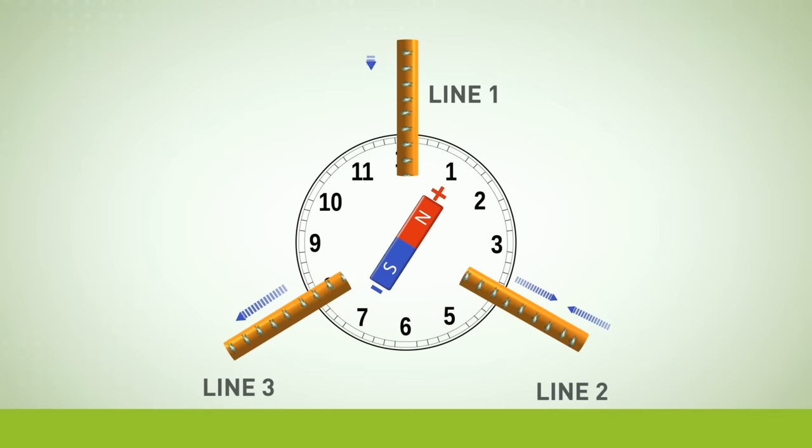But they are still moving in line one, attracted by the closer north pole, and they are moving in line three, repelled by the south pole.